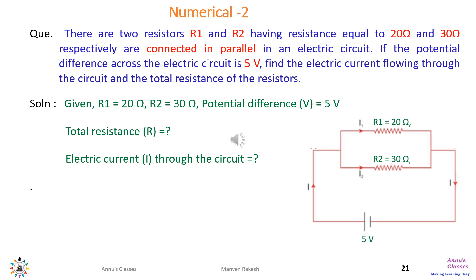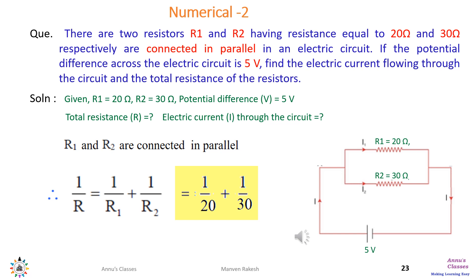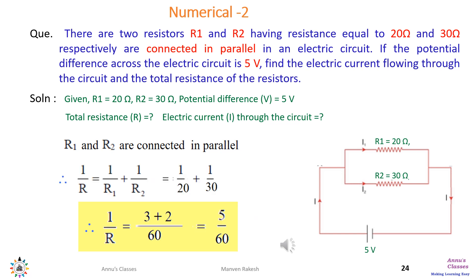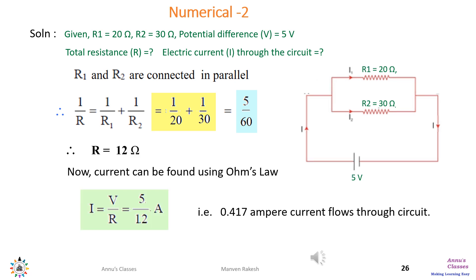Since they are connected in parallel, the formula is 1 over R equals 1 over R1 plus 1 over R2. Substituting: 1 over R equals 1 over 20 plus 1 over 30. The LCM of 20 and 30 is 60, giving 3 plus 2 over 60, so 1 over R equals 5 over 60. Therefore R equals 12 ohms. Applying Ohm's law with V equals 5 volts and R equals 12 ohms gives the current I.